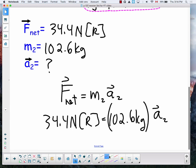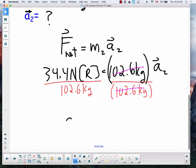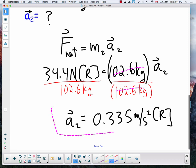And just like we did with the last one, divide both sides by the player's mass. And on the right hand side the masses cancel off. And on the left hand side we are left with, to proper sig digs, 0.335 meters per second squared.